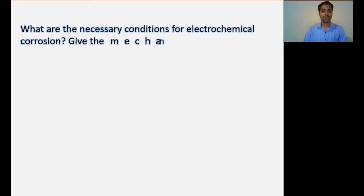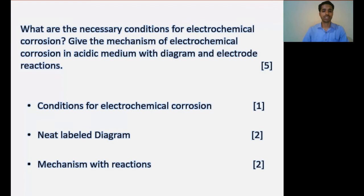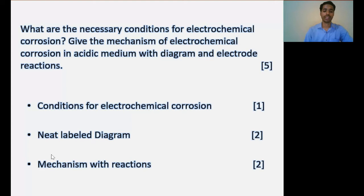A possible exam question on this mechanism: What are the necessary conditions for electrochemical corrosion? Give the mechanism of electrochemical corrosion in acidic medium with diagram and electrode reactions. If this question is for five marks, you need to write the necessary conditions for electrochemical corrosion, draw a neat labeled diagram, and explain the mechanism with the anodic and cathodic reactions.